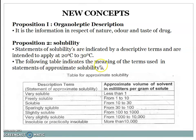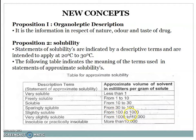The following table indicates the meaning of terms used in statements of approximate solubilities. Very soluble: less than 1 ml of solvent. Freely soluble: 1 to 10 ml. Soluble: 10 to 30 ml. Sparingly soluble: 30 to 100 ml. Slightly soluble: 100 to 1000 ml. Very slightly soluble: 1000 to 10,000 ml. Insoluble or practically insoluble: more than 10,000 ml.